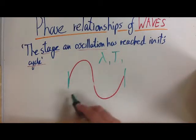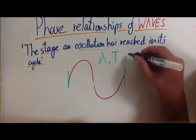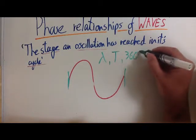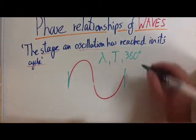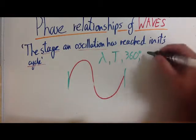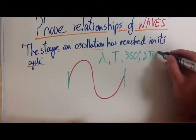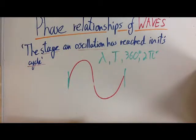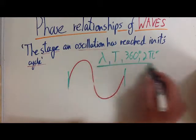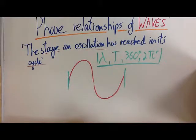We can also describe it in terms of degrees. One wave is said to be equivalent to 360 degrees. The last one is for the more mathematically inclined of us. We can describe one wave as two pi radians. Now, these are equivalent to one wave.